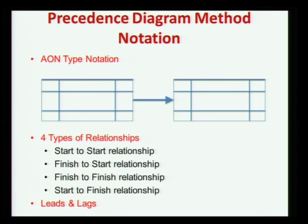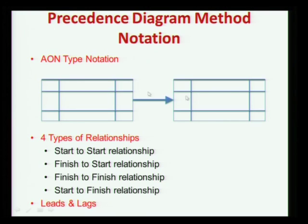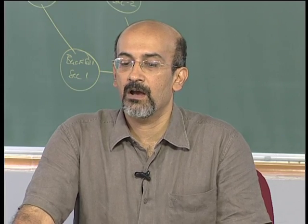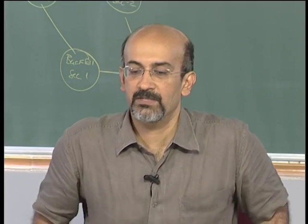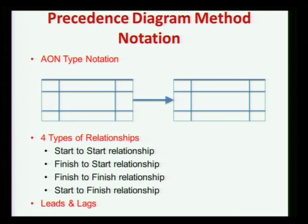When we get into the basics of the Precedence Diagramming Method notation, you have the AON type of notation. Instead of the circle used for AON, you have a rectangle divided into various spaces. These spaces can be filled with things like activity name, early start, early finish, activity number, late start, late finish, and floats. Depending on the type of representation and nomenclature you want, different software and methodologies will use different values in these boxes.